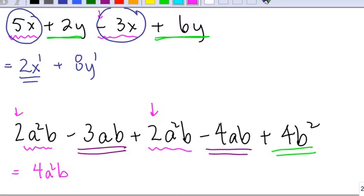Then let's deal with the ones with the double line under it. So -3ab minus 4ab is -7ab. You can think about it on a number line.